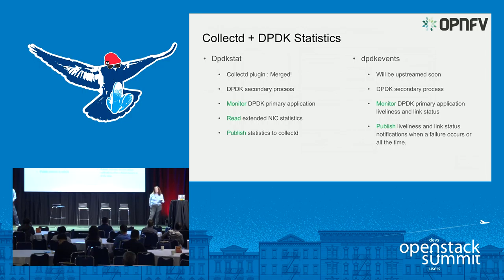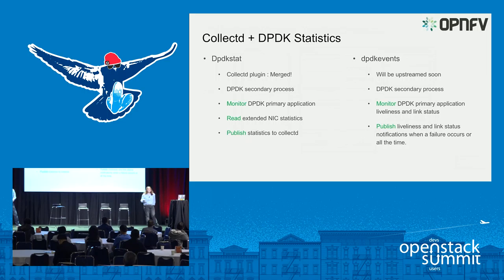The DPDK stat plugin was recently merged and will be available in CollectD when it's released in December. It uses a DPDK secondary process to monitor what's going on in your primary packet processing applications. The DPDK events plugin will provide any events that need to be addressed immediately — for example if the link status goes down. With statistics you want to monitor and deal with issues at a later time, but events need to be addressed immediately.